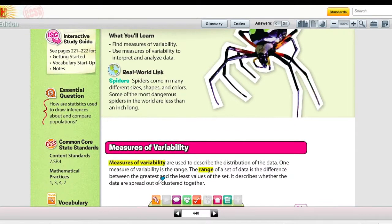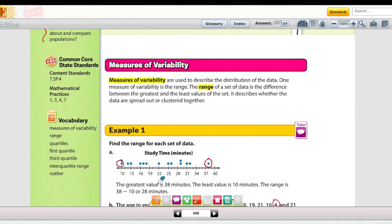In the middle of page 440, you have two of your definitions. There are seven definitions for this particular lesson, but it starts off with measures of variability, which are used to describe the distribution of the data. And then one of the measures is range, and the range of a set of data is just the difference between the greatest and the least values of the set.